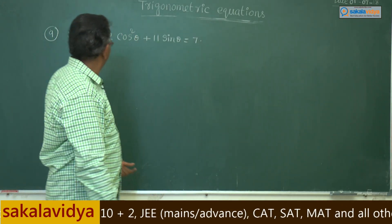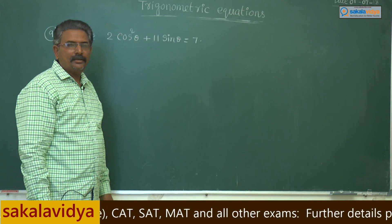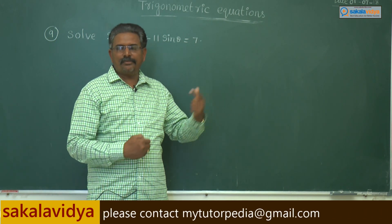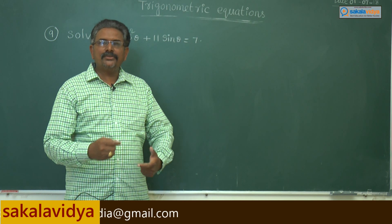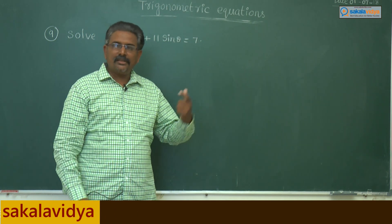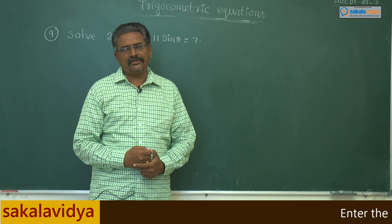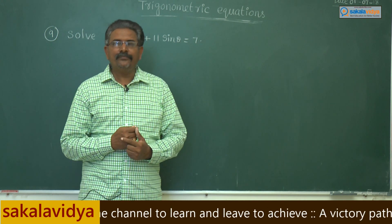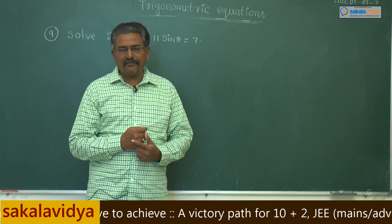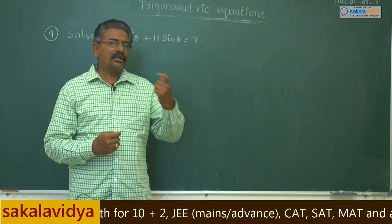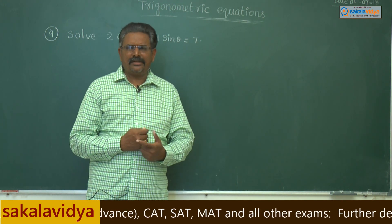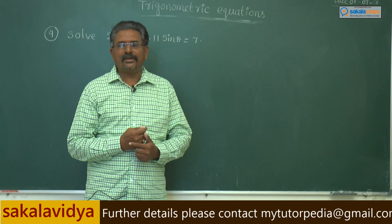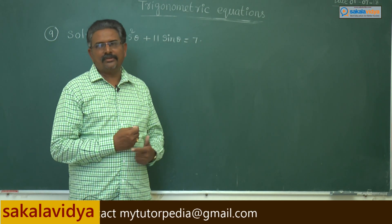Now solve: 2cos²θ + 11sinθ = 7. We are asked to find the general solution of this trigonometric equation. Observing the given equation, it is in the form of a quadratic equation. We know how to solve a quadratic equation using several methods. We will adopt one of those methods, and then apply the appropriate formula to solve the problem.